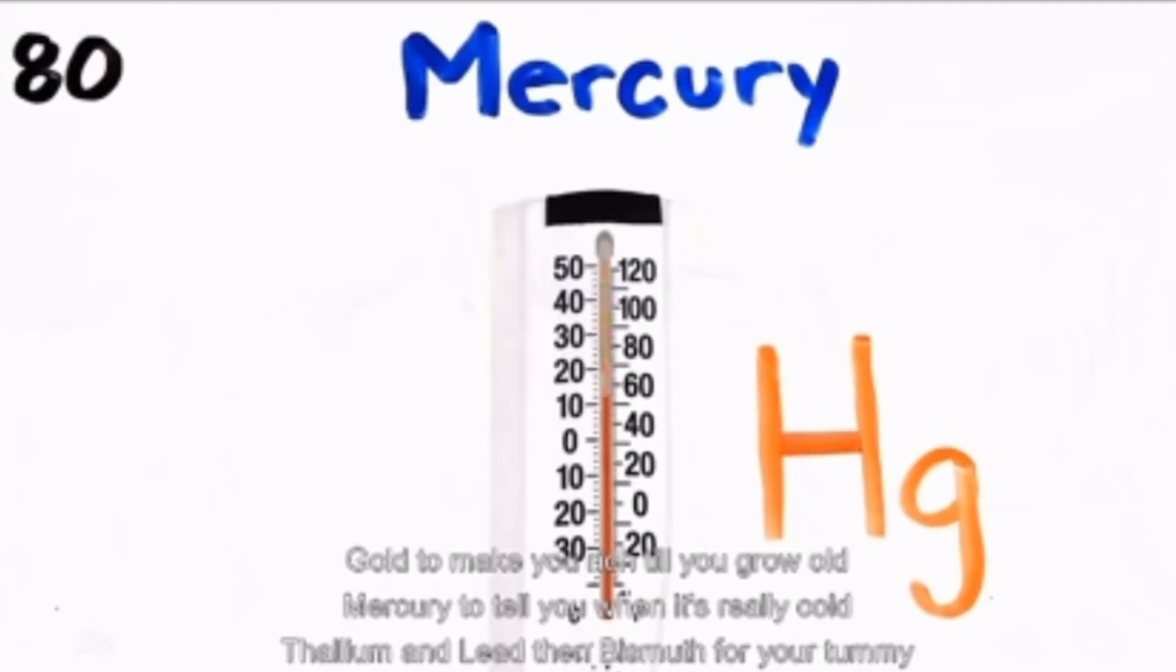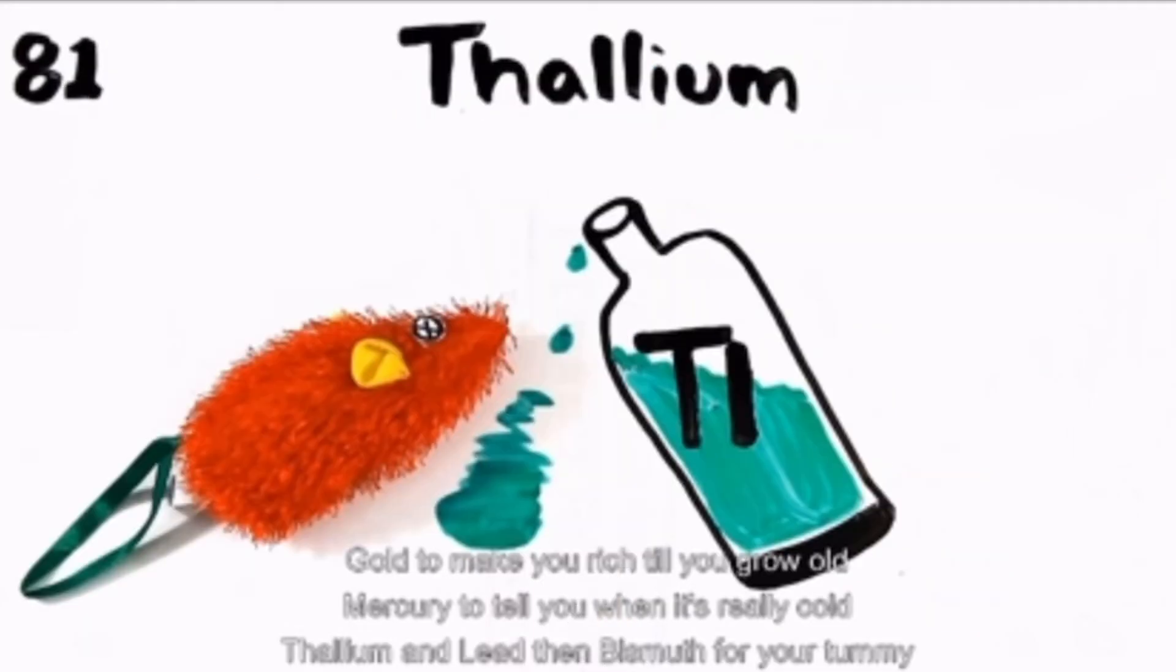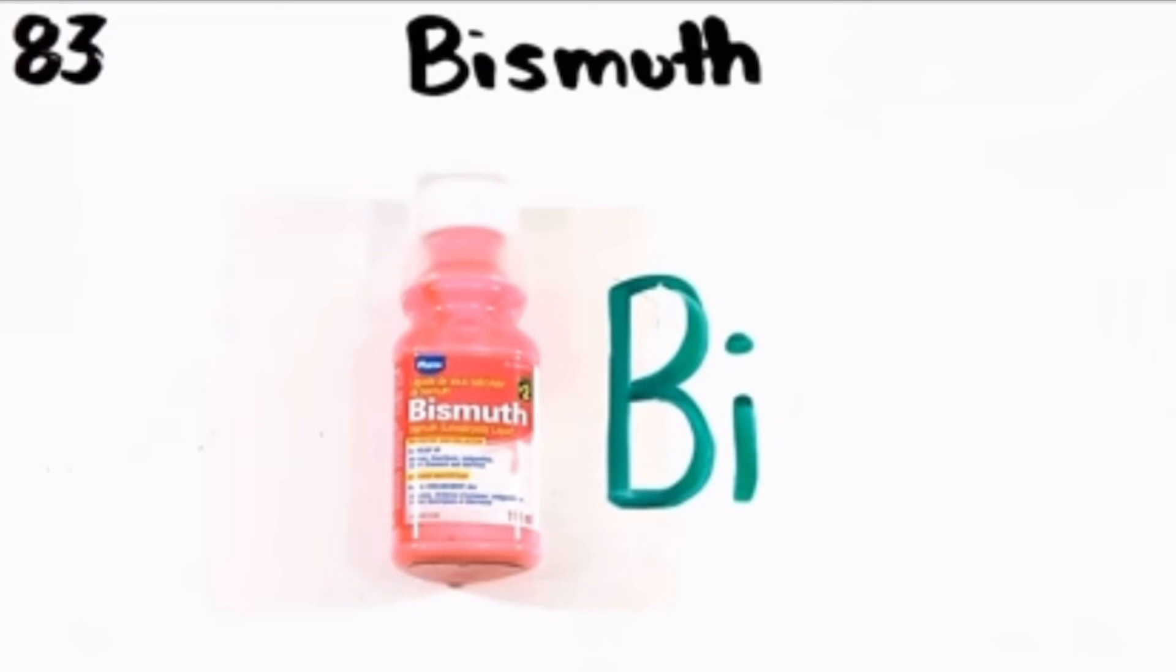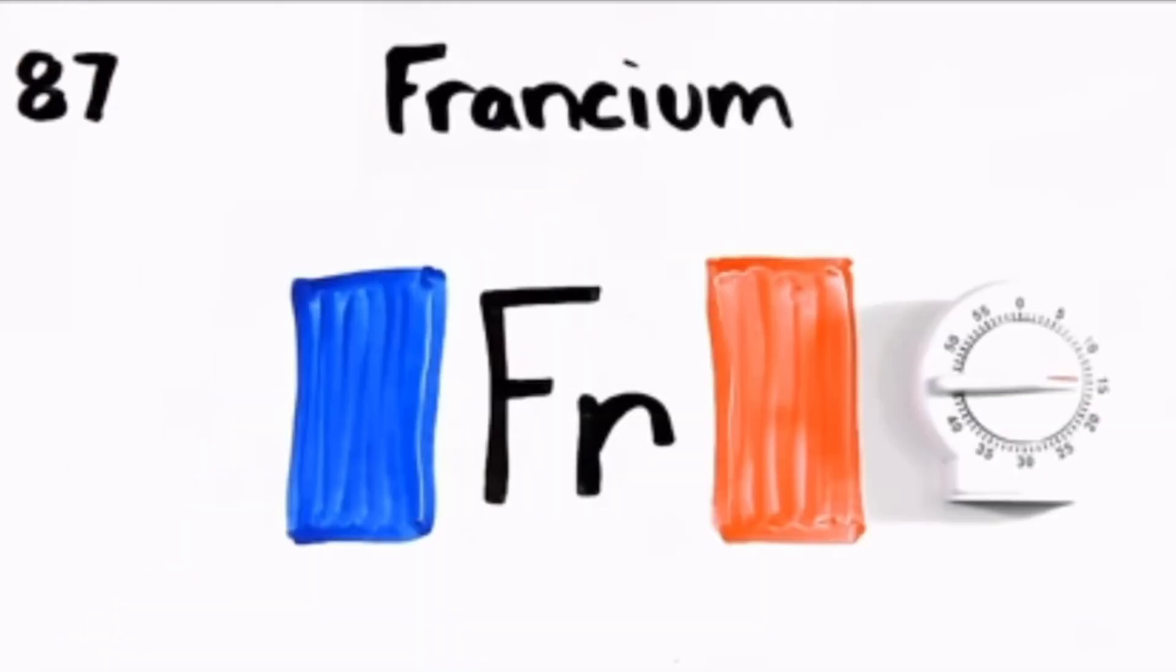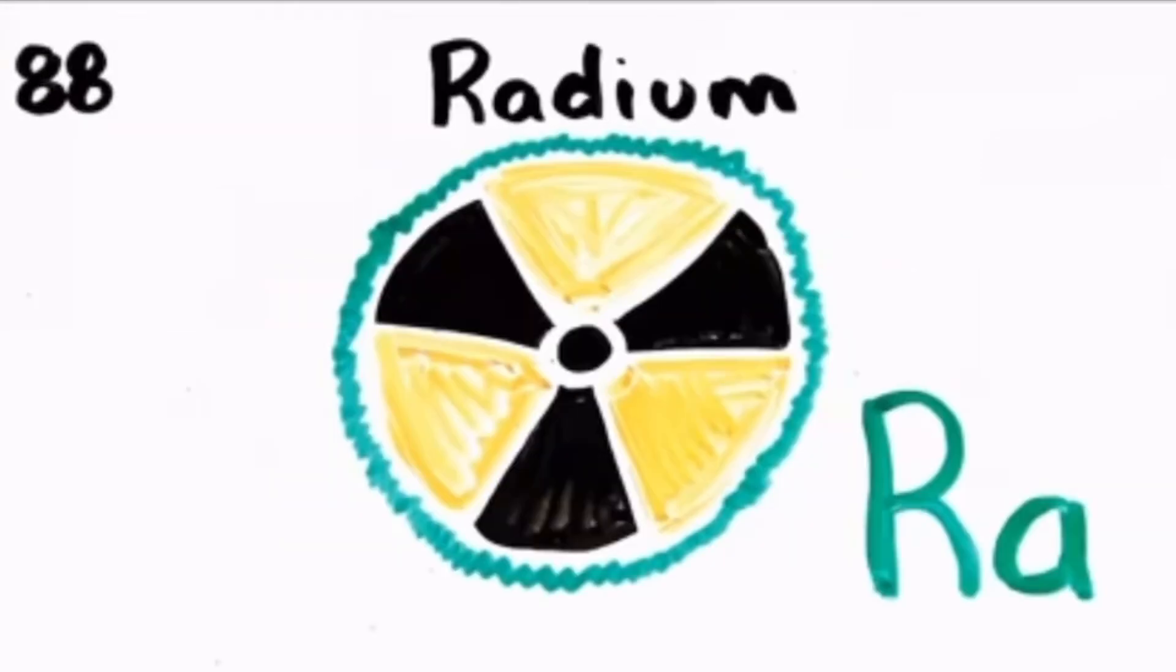Mercury to tell you when it's really cold, thallium, and lead then bismuth for your tummy. Polonium, astatine would not be yummy. Radon, and francium will last a little time, radium.